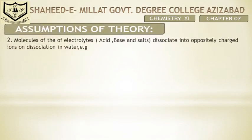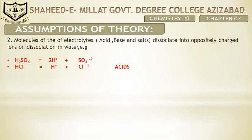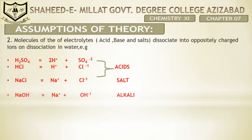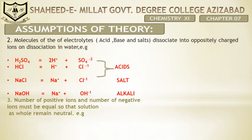Molecules of electrolytes — acids, bases, and salts — dissociate into oppositely charged ions on dissociation in water. Kisi bhi electrolyte ki jo molecules hote hain, wo paani mein dissolve hone ke baad apne ions mein dissociate ho jate hain. Electrolytes mein acid, salts, aur alkali ki examples maujood hain.